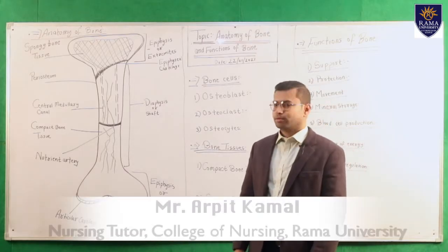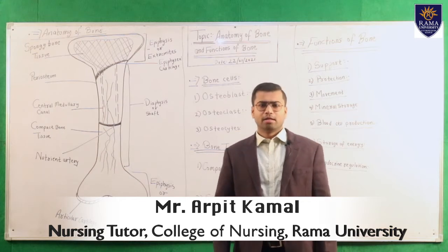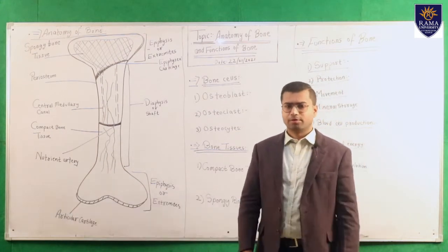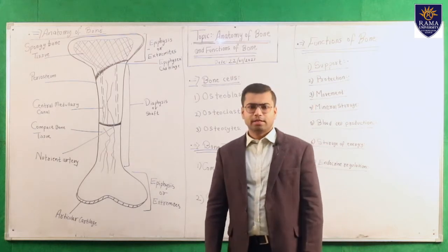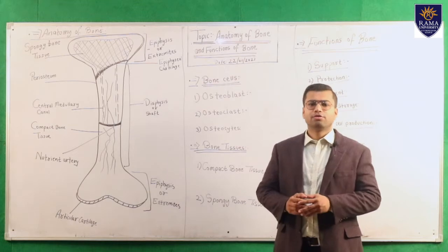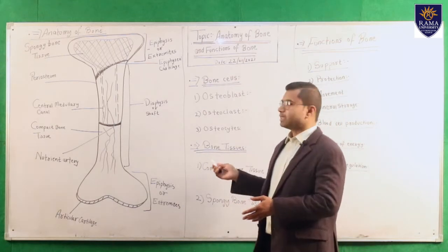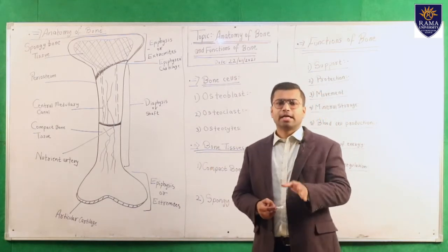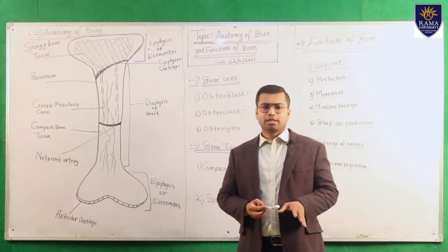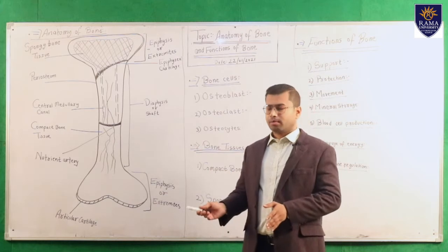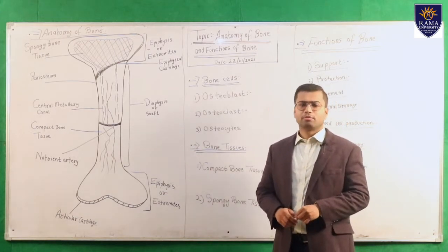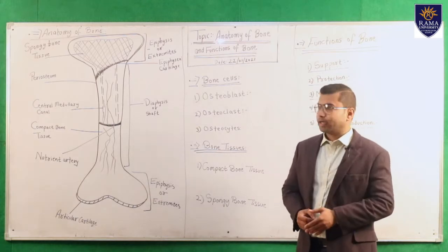Good morning, myself Arpit Kamal. Today's topic is anatomy of bone and functions of bone. Bone is a strong and durable type of connective tissue — a specialized connective tissue. Its main constituent is calcium phosphate, so bone is mainly composed of calcium phosphate.